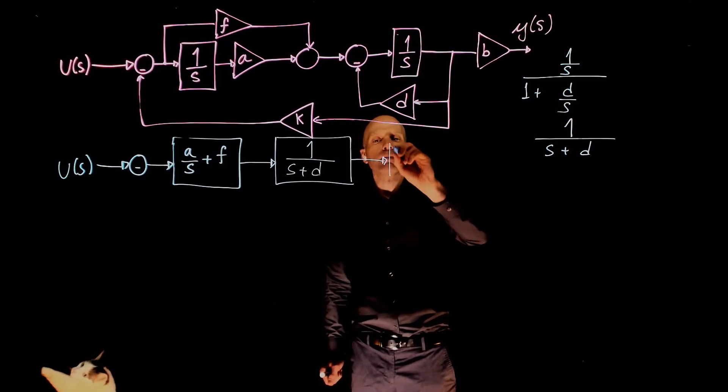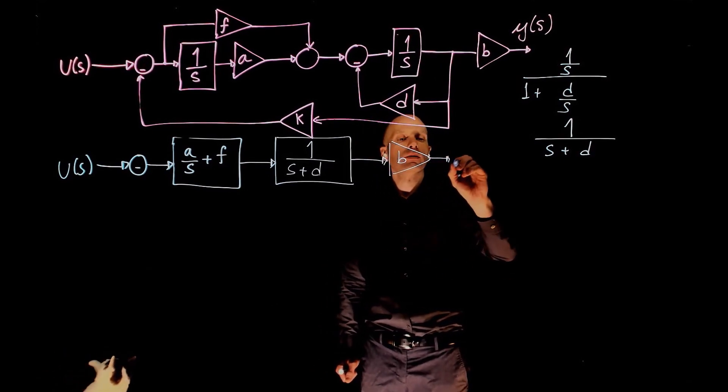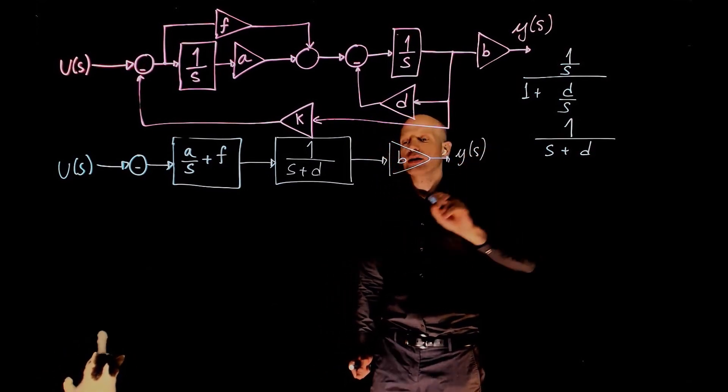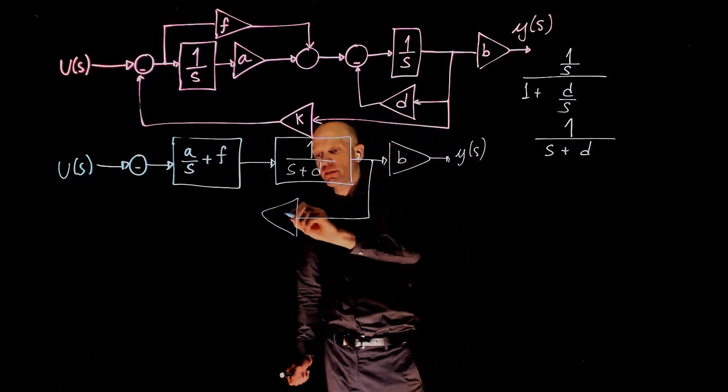And then b remains the same. Here is the output y of s. And you can finally now have the feedback k.